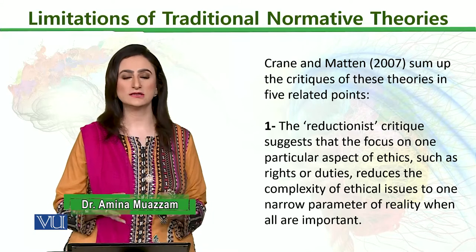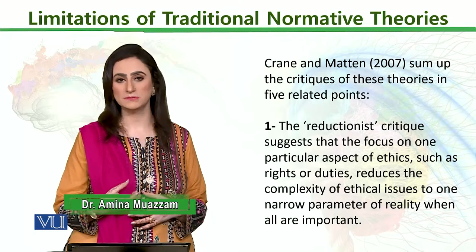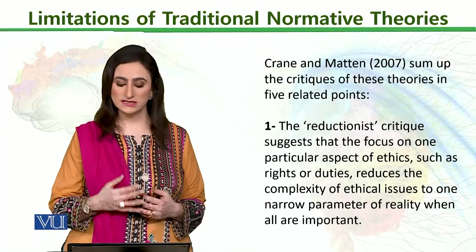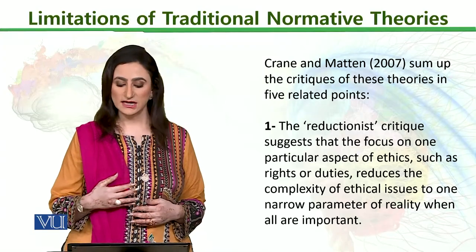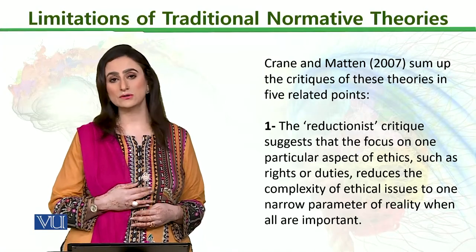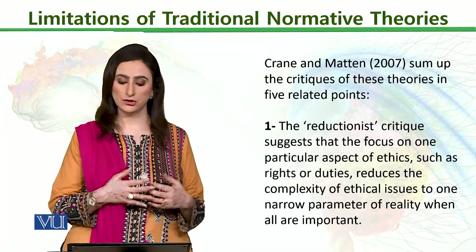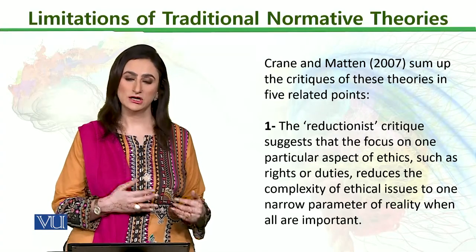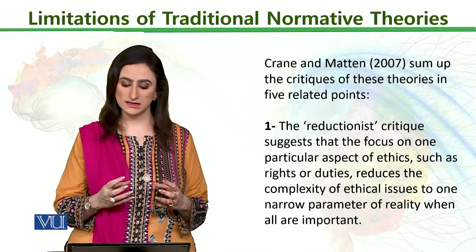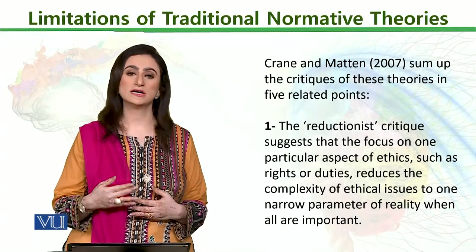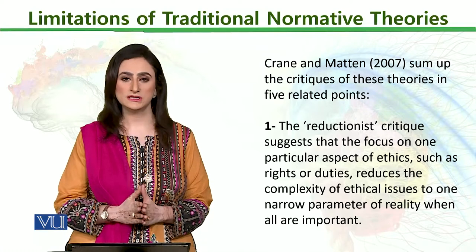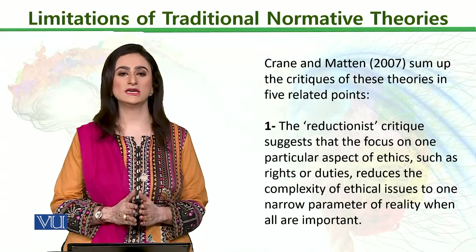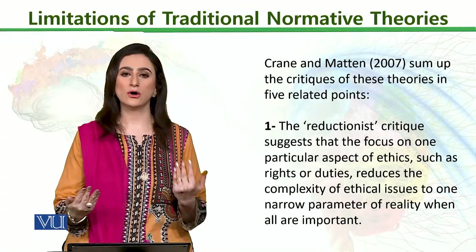They had 5 major points which are very important to remember. The first is that the reductionist critique suggests that the focus on one particular aspect of ethics, such as rights or duties, reduces the complexity of ethical issues to one narrow parameter. If we only see the reductionist approach in society, then we don't see any situation in the right or wrong parameter.